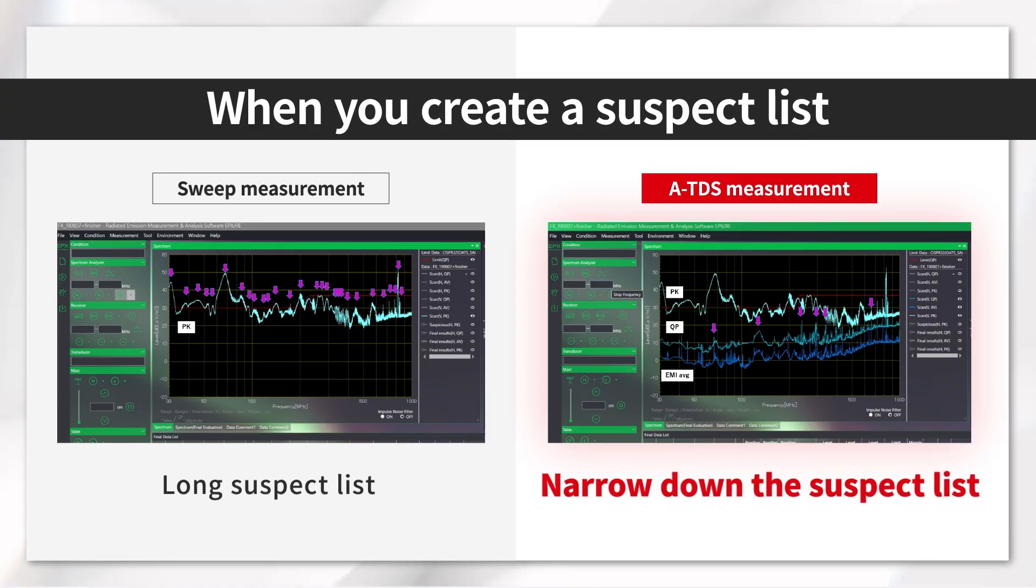In pre-scan with the ATDS, you can reasonably narrow down the suspect list and avoid unnecessary measurements in the final measurement. This is because the QP measurement results can be checked at the same time. Let's take a look at the pre-scan results. The arrows point to the noise picked up for the suspect list. You can see that the number of noises picked up for the compliance measurement is dramatically narrowed down when using ATDS.